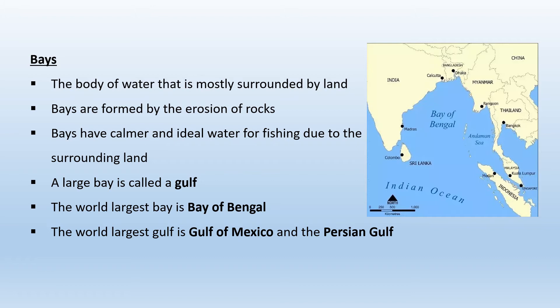Our next kind of landform is bays. What are bays? A body of water surrounded by land is called a bay. Bays are formed by the erosion of rock. Bays connect to another water body. The water in bays is calm and ideal for fishing. A large bay is called a gulf. What is the difference between a bay and a gulf? A gulf is larger and deeper than a bay, but a gulf has a narrower opening.